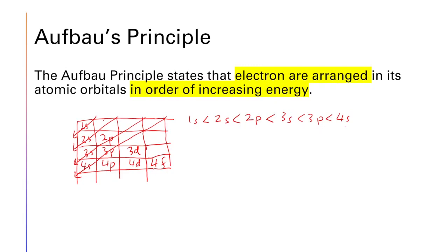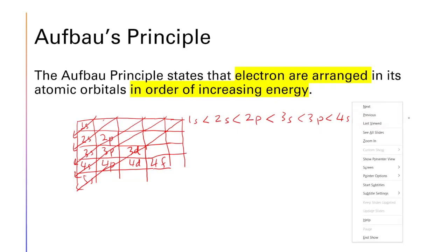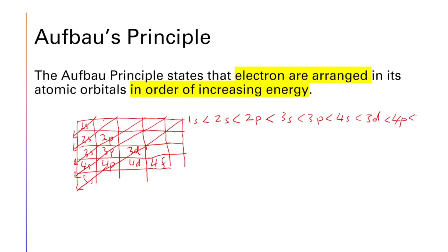This gives the usual order of electronic configuration. Continuing further: 3d, then 4p, then 5s. So the order of increasing energy is: 1s, 2s, 2p, 3s, 3p, and so on — electrons are filled in this sequence.